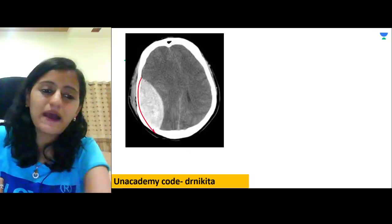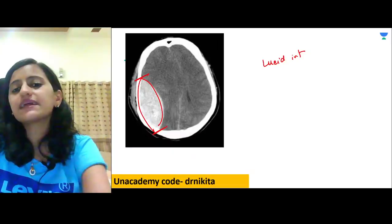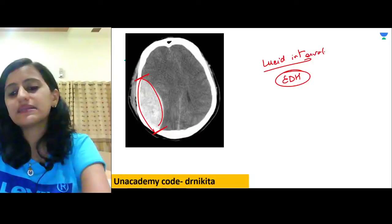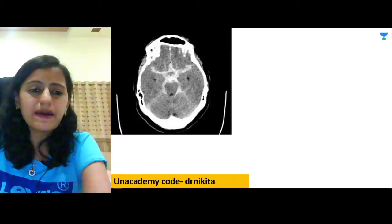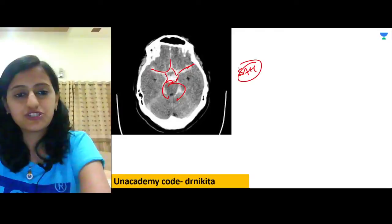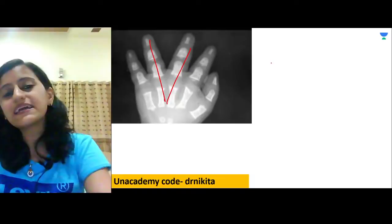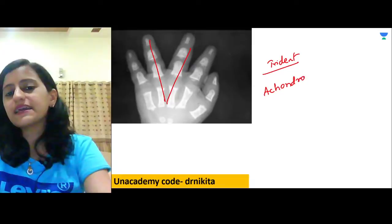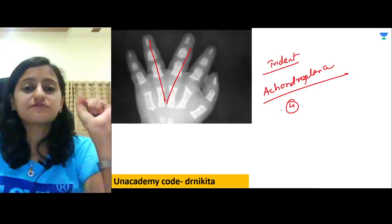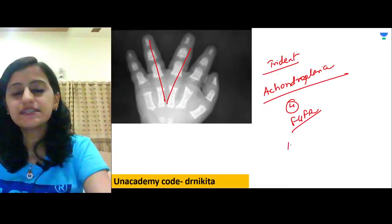EDH (biconvex) does not cross sutures; lucid interval is a hallmark. Subarachnoid hemorrhage appears as blood in the cisterns — the star of death sign. The trident or starfish hand (increased gap between fingers) is seen with achondroplasia — chromosome 4, FGFR3 gene mutation, autosomal dominant.